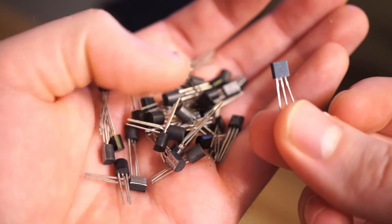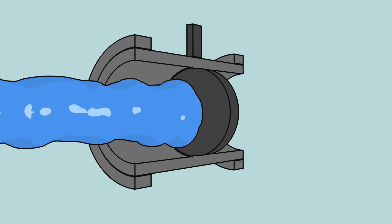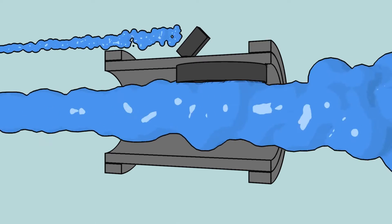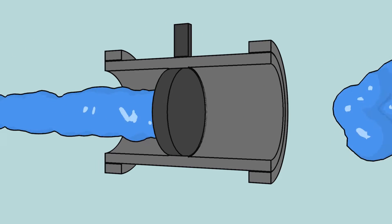You can think of a transistor like a pipe preventing water from passing through unless a small stream of water is sent to the valve in the middle. We can build simple logical situations out of this property.